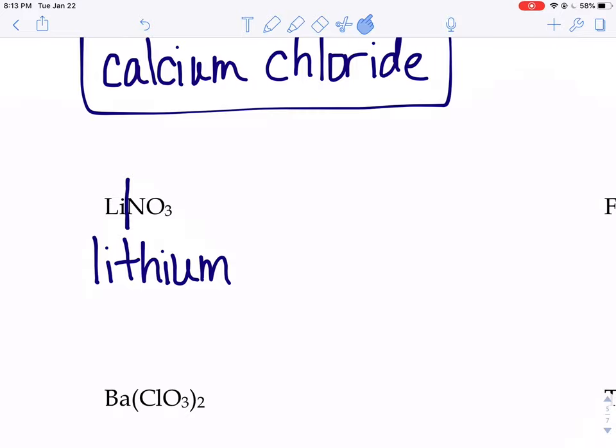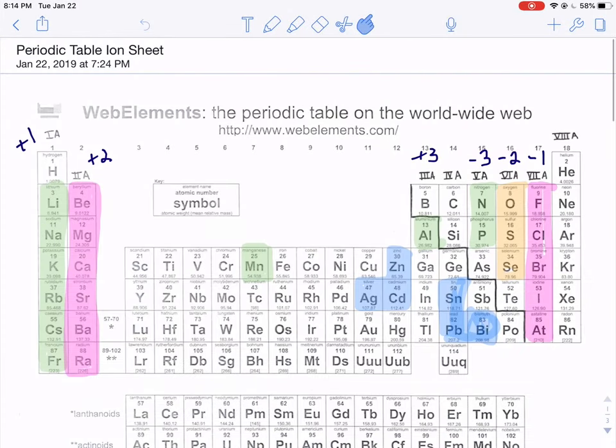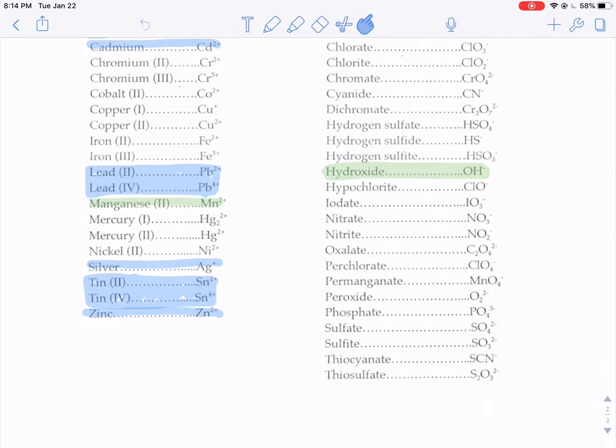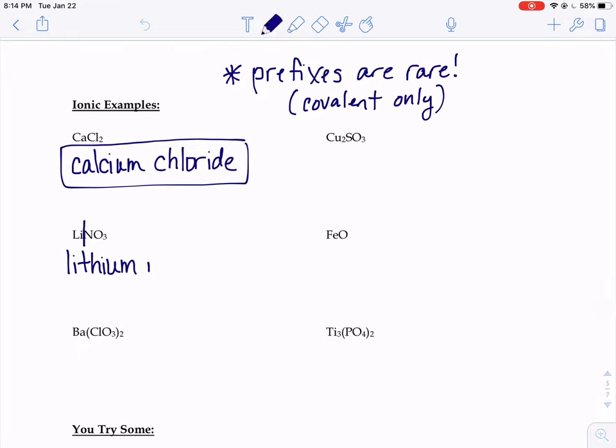So NO3, we got to find NO3 on that ion sheet. NO3 is over here on the right-hand side. Here's our NO3. NO3 is called nitrate. So we go here: nitrate. We just name each ion that's in the ionic compound.